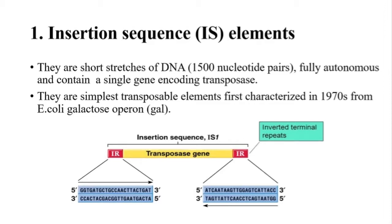Insertion sequence elements were first characterized in the 1970s from the E. coli galactose operon, where they were causing wild type to mutant and mutant to wild type transitions by inserting into bacterial genes.